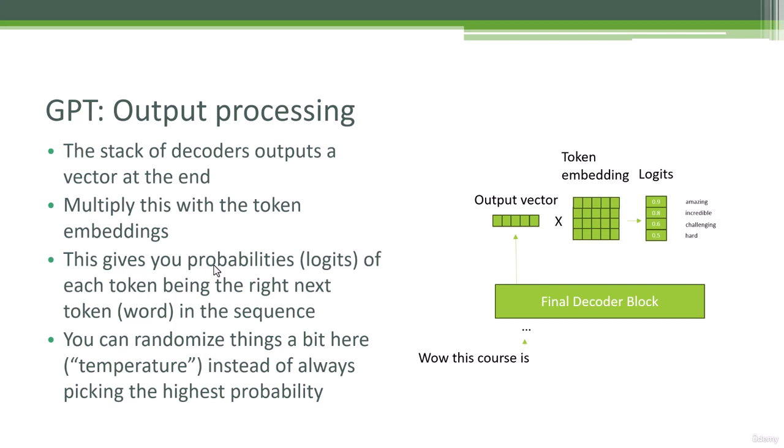How do we turn that into an actual word that we want to generate? We take that vector and we multiply it by the token embeddings. That ultimately gives us the probabilities of each token being the next token. Pretty cool how that works.